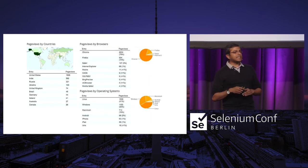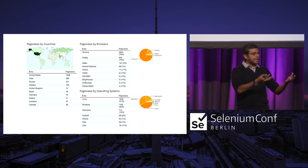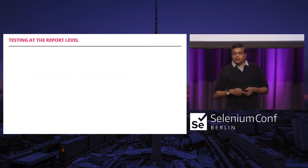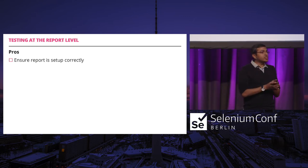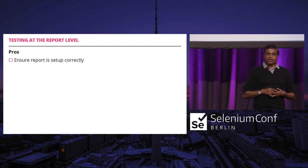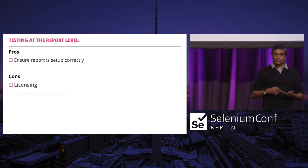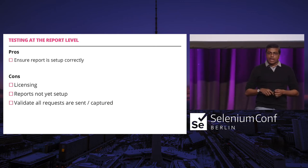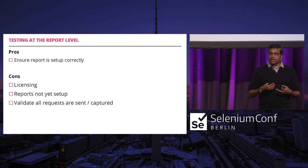This is all about testing the end product — the product is created, analytics is set up correctly, reports are set up correctly to start collecting data and showing meaningful information. The advantage is you're going to know exactly what happens when real users use it. But the con is potentially licensing issues or reports not yet set up in your test ecosystem to validate before going live. And how do you ensure all the requests going through are correct or not?